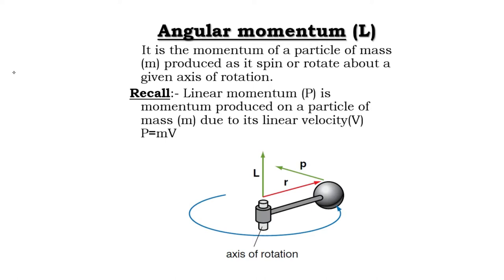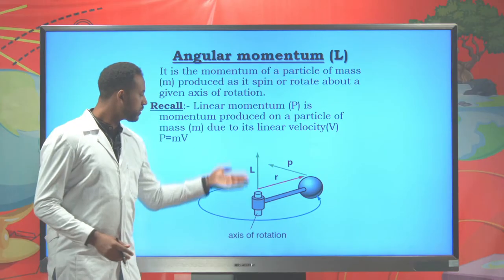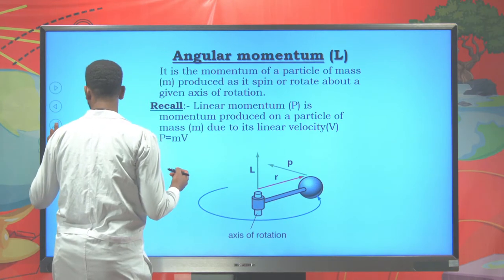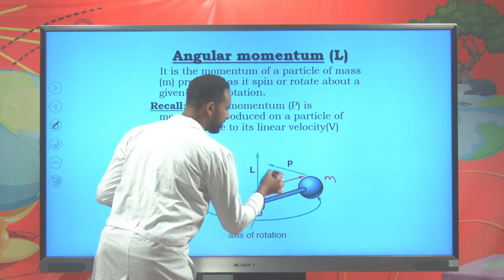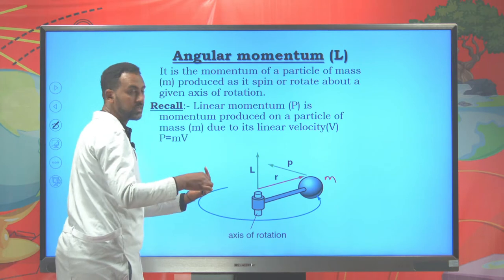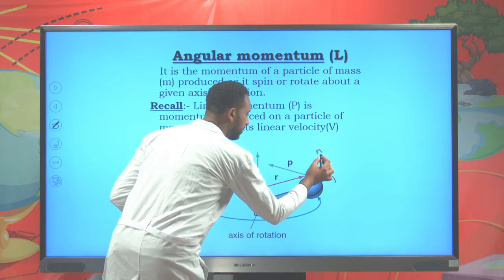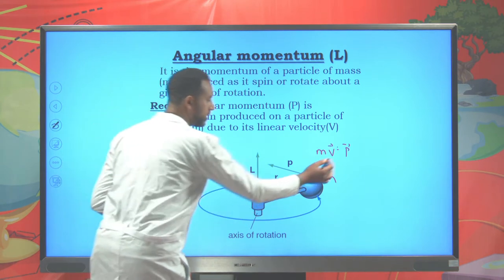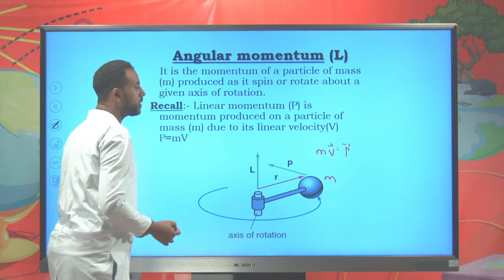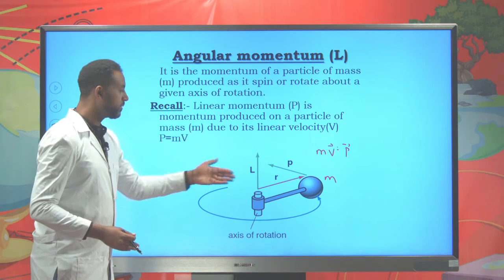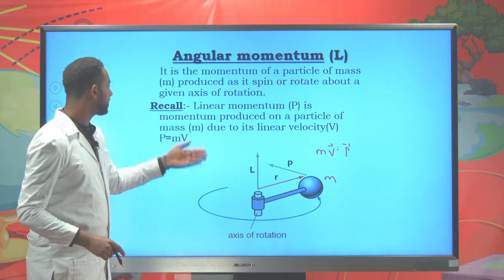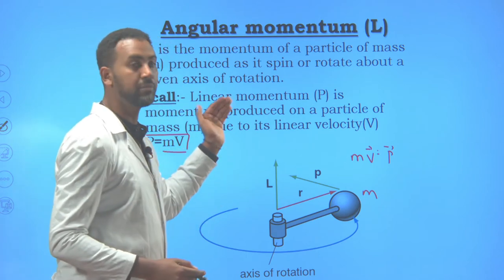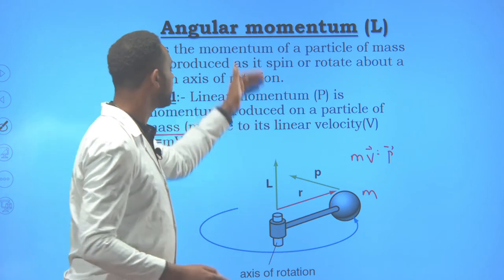Suppose here you have an axis, and about that axis you have a particle of mass m. This particle has its own mass and tangential velocity v, and it tends to rotate about a given fixed axis. It's possible to find mass times linear velocity v to be the linear momentum. If you multiply the linear momentum by the distance or the moment arm r, you can find the angular momentum of a given rotating object. Linear momentum p is the product of mass times velocity, and linear momentum multiplied by r gives the angular momentum.